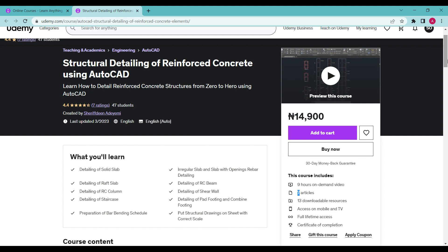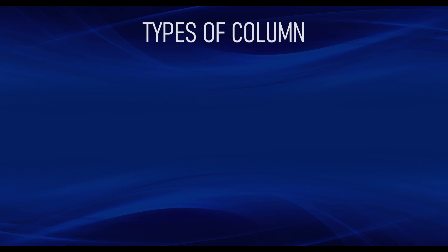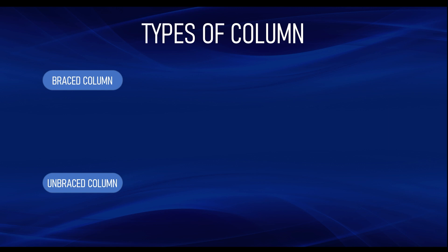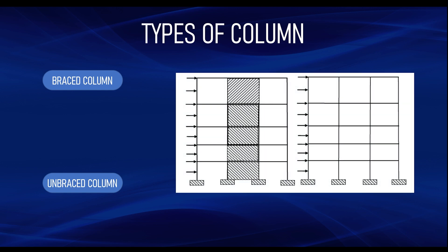Continuing on, we have different types of columns. We can categorize columns based on many criteria. If you consider a building as a whole, you can classify columns as either braced or unbraced. The classification of a column as braced or unbraced depends on the mode of resisting lateral forces. When the column is not designed to resist lateral forces, it is considered to be a braced column. When the column is designed to resist lateral forces — such as from wind load on the building — that column is considered to be an unbraced column. Looking at this diagram, you can see two buildings both subjected to lateral forces from wind load.